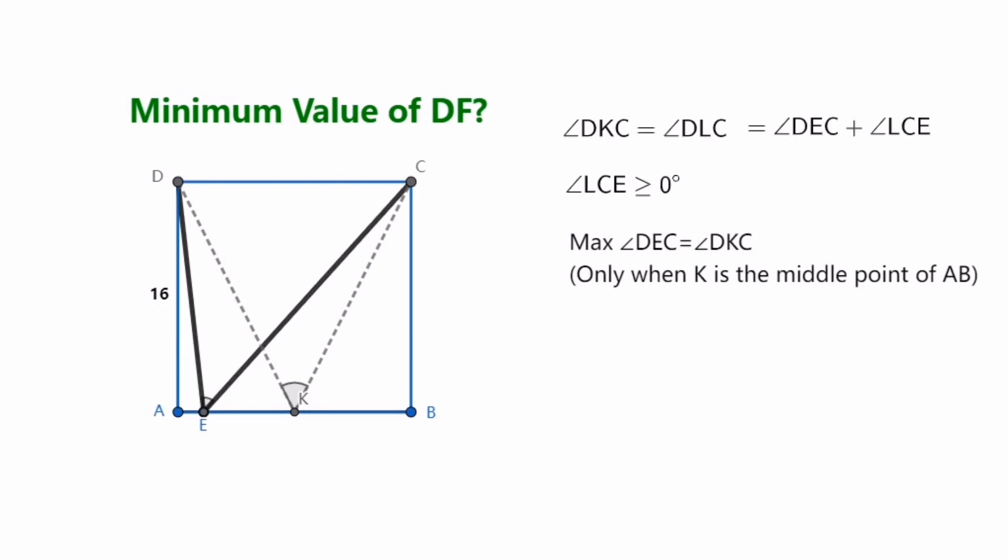So let's go back to the beginning of what we need to figure out. We move point E to point K, that's the midpoint of segment AB. When E is the midpoint of segment AB, let's figure out the value of DF. That's the minimum value we want. When E is the midpoint of line segment AB, obviously the segment EB is equal to 8, and the segment EA is equal to 8.